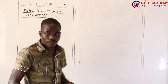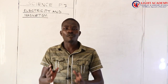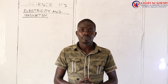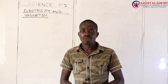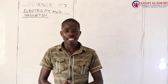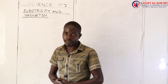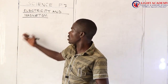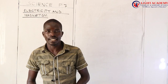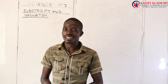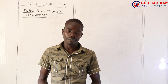At first, I'll explain to you these terms. Electricity simply means the form of energy produced by the flow of electrons. And when you look at magnetism, magnetism is a property of a magnet that enables it to attract other magnetic substances. That's what we call magnetism.